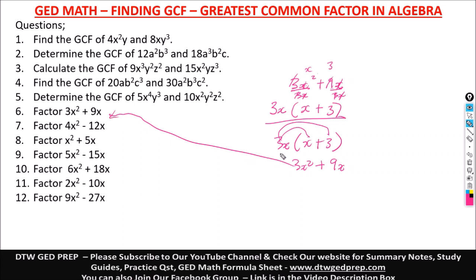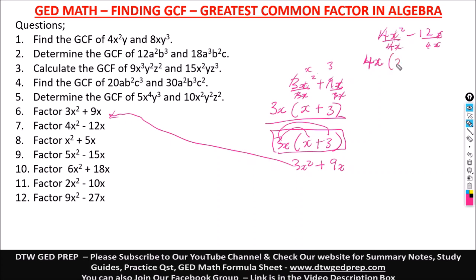For 4x² − 12x: the greatest common factor is 4 for the numbers and x for the variable, giving 4x. Dividing 4x² by 4x leaves x; dividing 12x by 4x leaves 3. The factored form is 4x(x − 3). When you multiply back out you get the original expression.